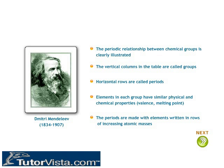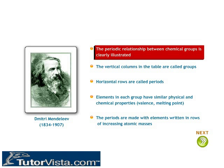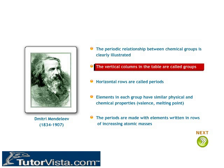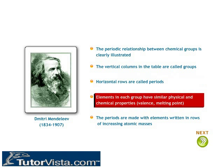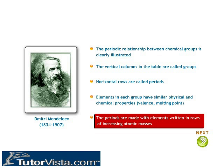Mendeleev's Periodic Table: The periodic relationship between chemical groups is clearly illustrated. The vertical columns in the table are called groups, and horizontal rows are called periods. Elements in each group have similar physical and chemical properties, including valence and melting point. The periods are made with elements written in rows of increasing atomic masses.